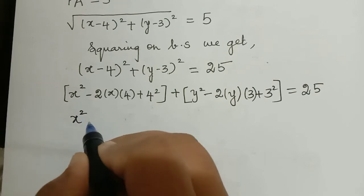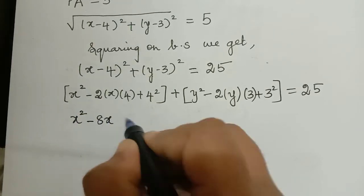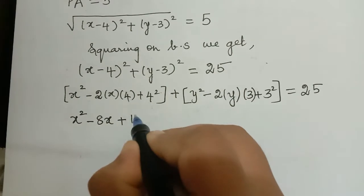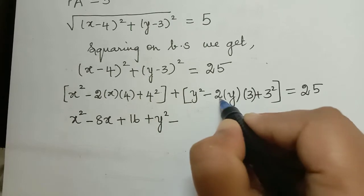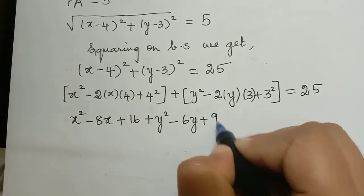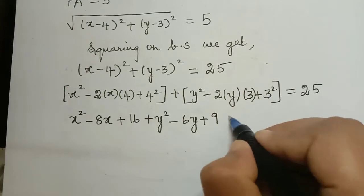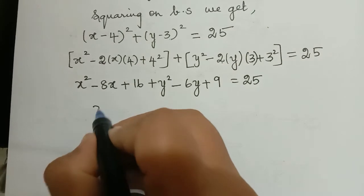So this becomes x squared minus 2 multiplied with 4 which is 8x plus 4 squared is 16 plus y squared minus 2 multiplied with 3 is 6y plus 9, because 3 squared is 9, equal to 25. So this gets simplified further.